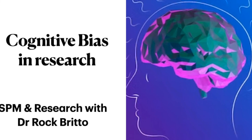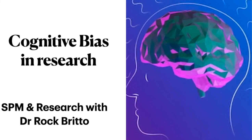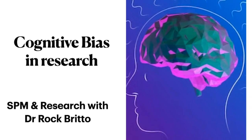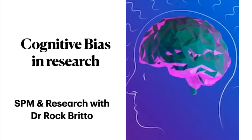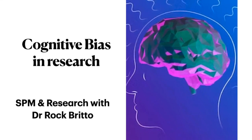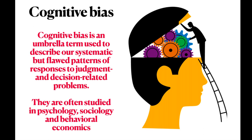Hello all. In this video, we are going to discuss cognitive bias in research. These cognitive biases are very important in real life for effective decision making. Cognitive bias is an umbrella term used to describe our systematic but flawed patterns of responses to judgment and decision-related problems. They are often studied in psychology, sociology, and behavioral economics.